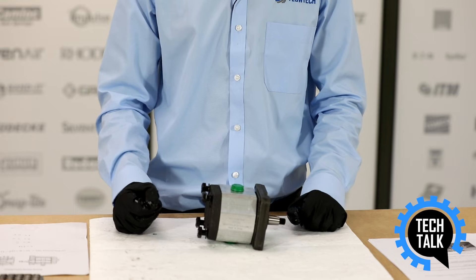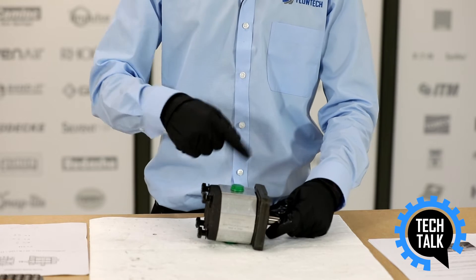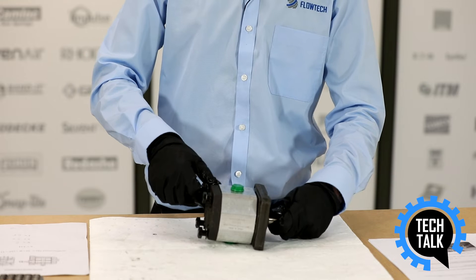Hello and welcome to Flowtech Tech Talk. Today we're going to show you how to calculate the displacement size of a hydraulic gear pump. The displacement of a gear pump is the amount of fluid pumped per full revolution of the input drive shaft.